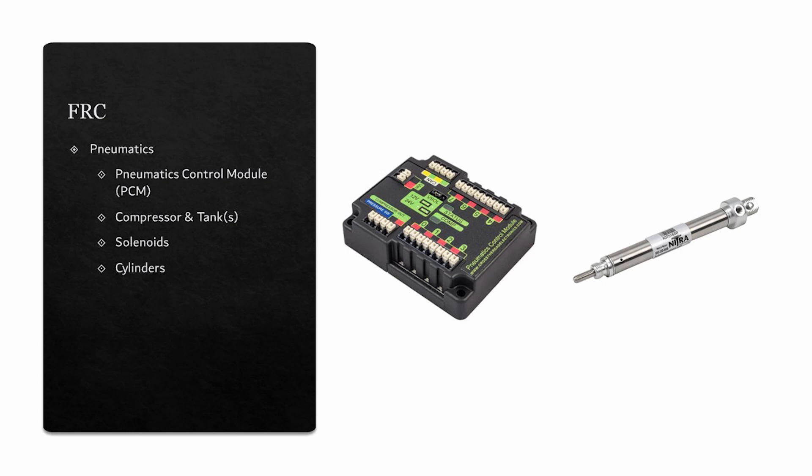These components work together to allow for solenoids to work and control the flow of air to the cylinders on the robot. Pneumatic cylinders have two positions, so they are only used with a mechanism that needs two positions to function. A cylinder is shown to the right.